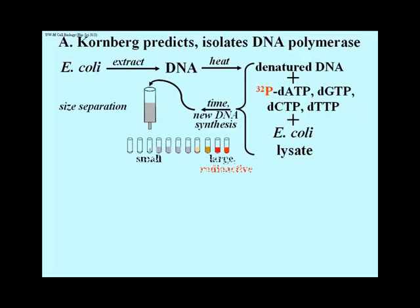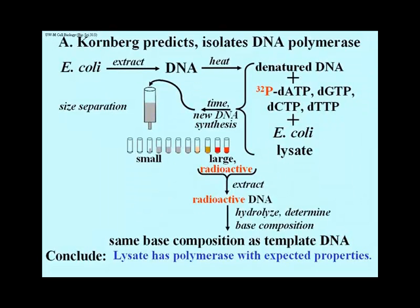After incubating this mixture for a while, the DNA was extracted and separated by size using a size-separating resin in a column, with material coming out the bottom in size order. The different size fractions were analyzed to see which were radioactive. Sure enough, large radioactive molecules had been made. This DNA was extracted and hydrolyzed back down to nucleotide monomers, and the base composition showed that the newly made DNA had the same proportion of A, G, C, and T as the parental E. coli DNA. Kornberg concluded that the bacterial lysate contained a polymerase with the expected properties.